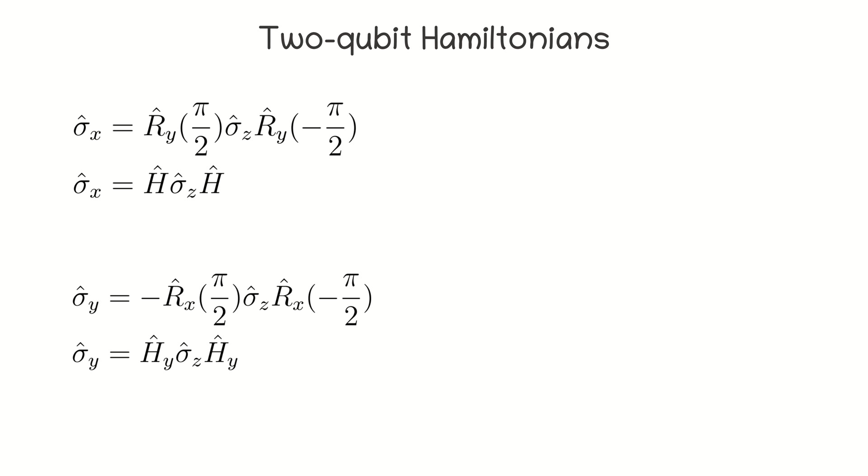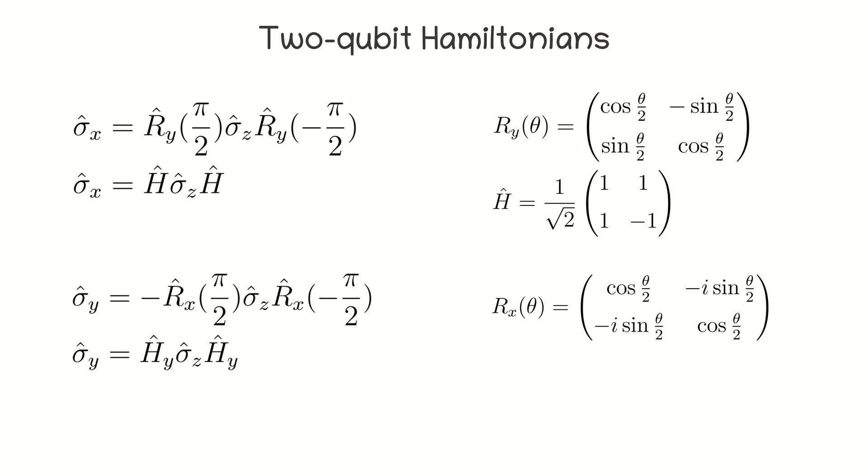We can now move on to the other two qubit Hamiltonians, which have operators X and Y. In order to construct quantum circuits to simulate evolution under the action of such Hamiltonians, we will need the following identities. They allow to express some quantum gates through others using a basis change. Here, Ry is the rotation around y-axis, H is the Hadamard gate, Rx is the rotation around the x-axis, and Hy is the following operator.